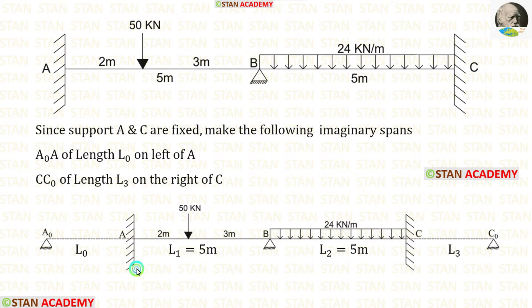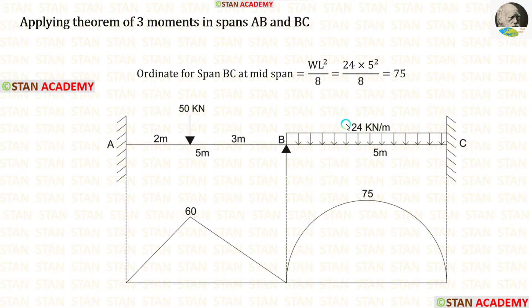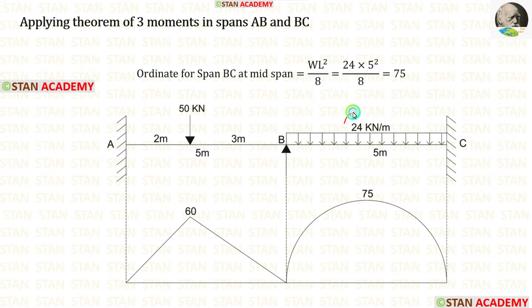Now let us take spans AB and BC and make the second equation. For span AB we have already calculated the ordinate. Now let us calculate the ordinate for BC. In span BC we have UDL acting for the full span. In a simply supported beam, if the UDL is acting for the full span, the formula to calculate the maximum bending moment is WL² upon 8. Here W is 24 and L is 5, giving us 75.